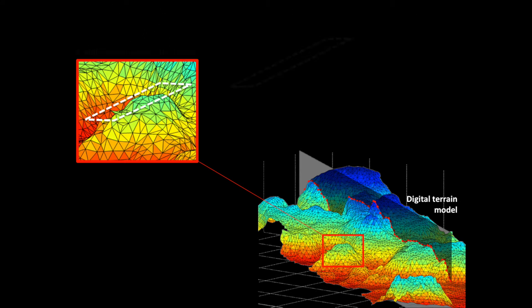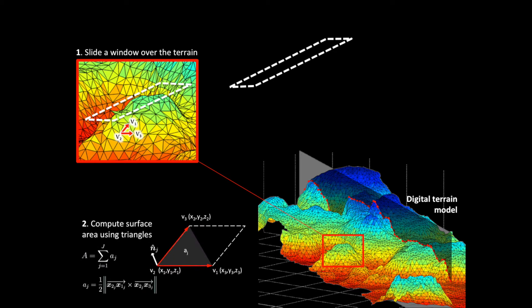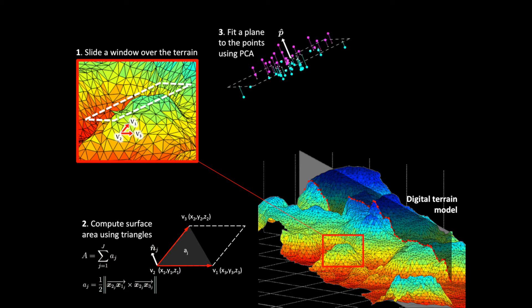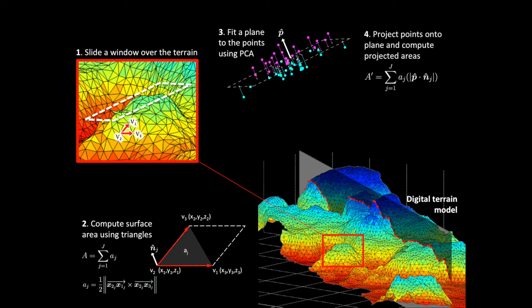This is done by sliding a window over the digital terrain and computing the area of the triangulated surface. Next, fitting a plane to the points allows us to calculate the flat projected area of the surface, and the ratio of the actual surface area to the projected area gives us an accurate estimate of terrain complexity. This method allows us to easily extract other metrics, including slope and aspect.